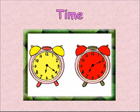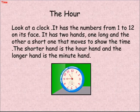Time. The hour. Look at a clock — it has the numbers from 1 to 12 on its face. It has two hands: one long and the other short, that move to show the time. The shorter hand is the hour hand and the longer hand is the minute hand.